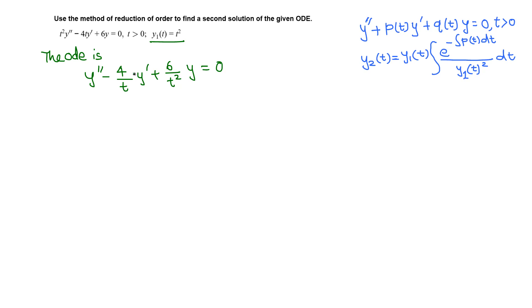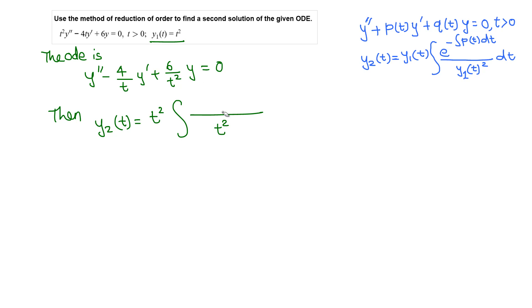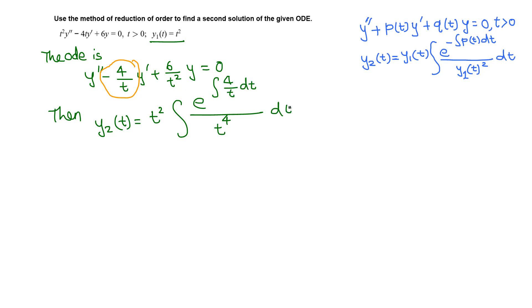With p(t) = −4/t and y1 = t², the second solution is y1 times the integral with y1² = t⁴ in the denominator. The exponent is −p(t) = −(−4/t) = 4/t, so the numerator becomes e^(∫4/t dt), and we integrate the whole expression dt. We must not cancel inside the integral.